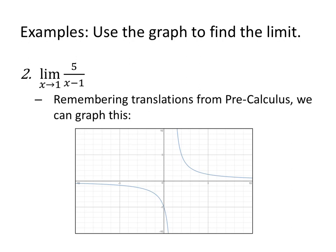Use the graph to find the limit. As x approaches 1 of 5 over x minus 1, and we can see here that x equals 1 is an issue. It's not in our domain. Remembering translations from a pre-calculus course that I'm sure you've taken, you take 1 over x, and you stretch it by a factor of 5, and you shift it to the right 1. So we have an asymptote here at x equals 1.